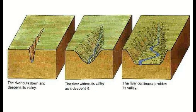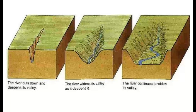As a recap from the Bradshaw model, in the upper course nearest to the source we have steep, narrow valleys. The discharge is low but the altitude is high, and altitude is important because it provides the gravitational potential energy that drives the vertical erosion — the vertical incision into the landscape.